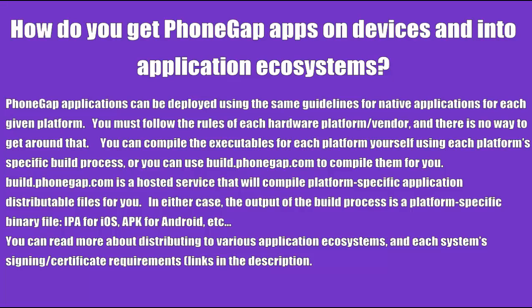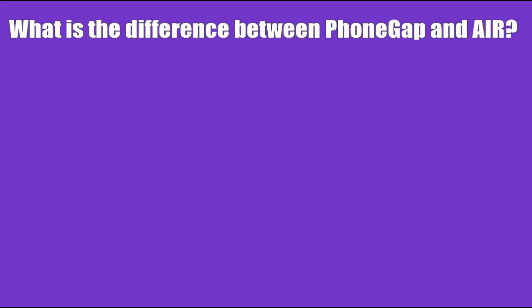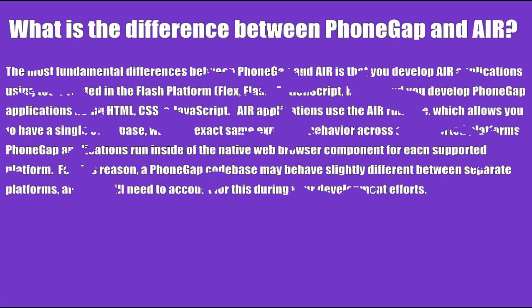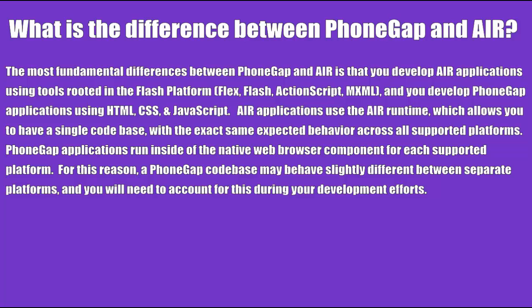You can read more about distributing to various application ecosystems and each system's signing certificate requirements. What is the difference between FongApe and AIR? The most fundamental difference is that you develop AIR applications using tools rooted in the Flash platform — Flex, Flash, ActionScript, and MXML — whereas you develop FongApe applications using HTML, CSS, and JavaScript. AIR applications use the AIR runtime, which allows you to have a single codebase with the exact same expected behavior across all supported platforms. FongApe applications run inside of the native web browser component for each supported platform, so a FongApe codebase may behave slightly differently between separate platforms, and you will need to account for this during development.